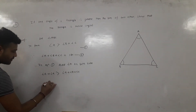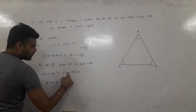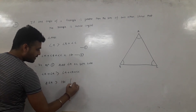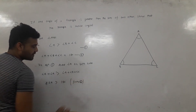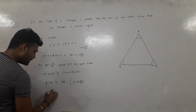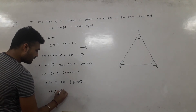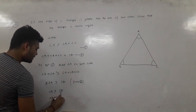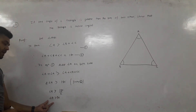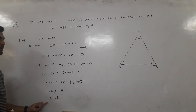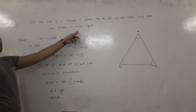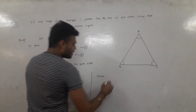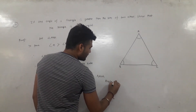So we get 2 times angle A is greater than angle A plus angle B plus angle C, which equals 180°. Dividing both sides by 2, angle A is greater than 180° divided by 2, which gives angle A is greater than 90°.